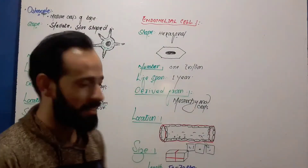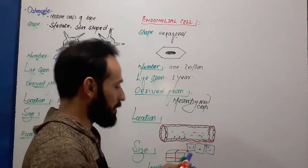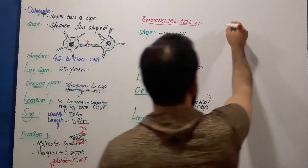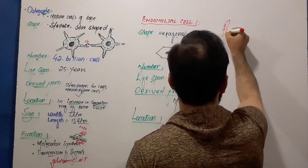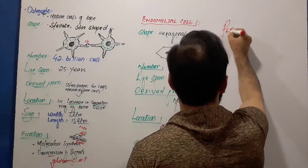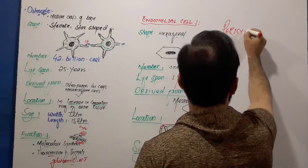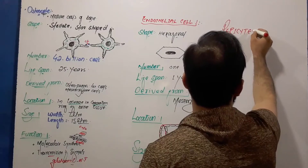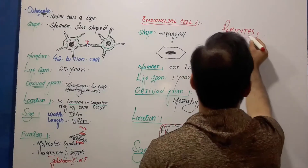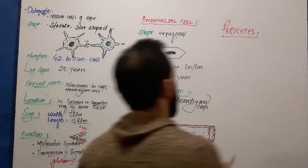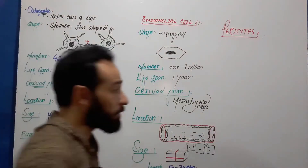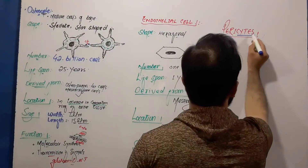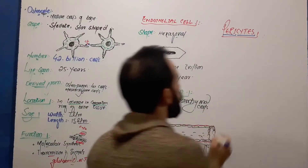Hello dear friends, welcome back. Let us see about the last cell of the connective tissue that we are going to discuss, called the pericyte. Pericytes — 'cyte' means cells and 'peri' means around. So these are the cells which are around other cells.